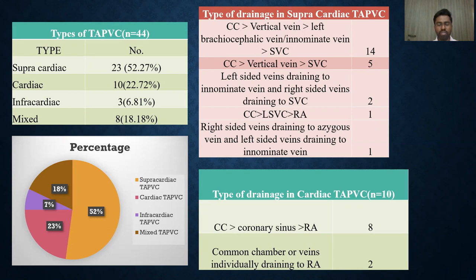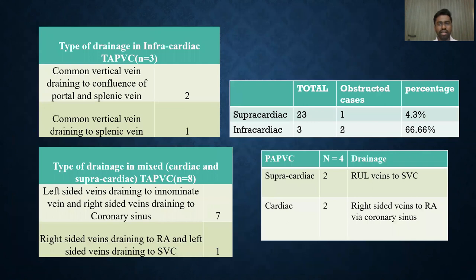In the drainage pattern of cardiac TAPVC, the most common pattern was common chamber draining into the right atrium via the coronary sinus, seen in 8 out of 10 patients. Common chamber or pulmonary veins individually draining to the RA was seen in the remaining 2 patients. Among the 3 patients of infracardiac TAPVC, common vertical vein draining to the confluence of portal and splenic vein was seen in 2 patients, and common vertical vein draining to the splenic vein was seen in 1 patient.